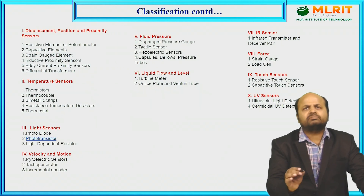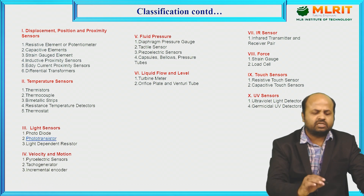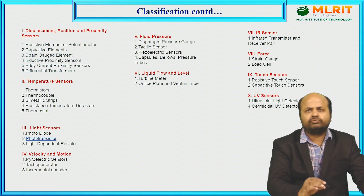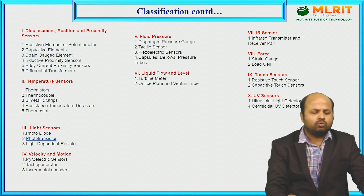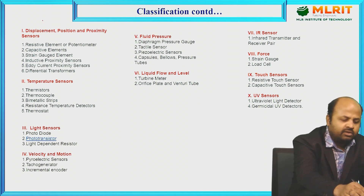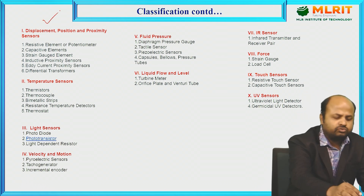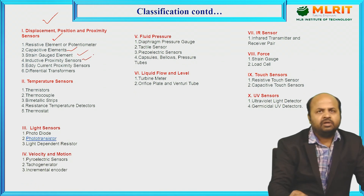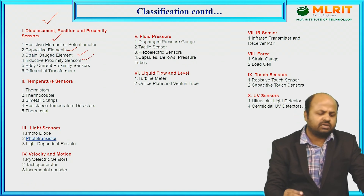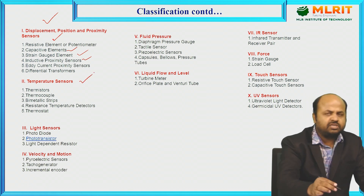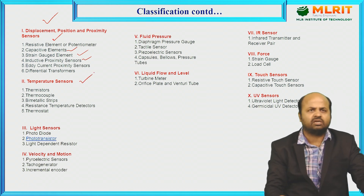Here are some examples of which type of transducer is used for measuring different physical quantities. For measurement of displacement, we can use resistive elements, capacitive elements, strain gauge, inductive, eddy current, proximity sensor, or differential transformers. For measuring temperature, we can use thermistor, thermocouple, or bimetallic strip.